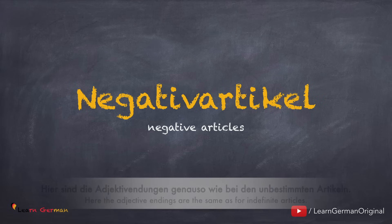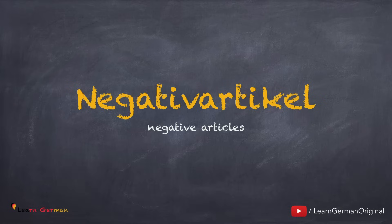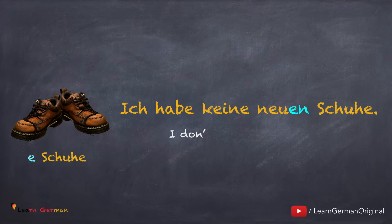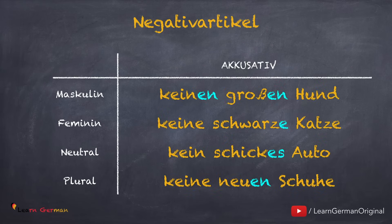Negativartikel: Die Adjektivendungen sind genauso wie bei den unbestimmten Artikeln, es gibt aber eine Pluralform. Hier ist ein Beispiel: ich habe keine neuen Schuhe. Ich ist Nominativ, keine neuen Schuhe ist Akkusativ-Objekt. Das Adjektiv bekommt die Endung -en. Übersicht Negativartikel im Akkusativ: Maskulin keinen großen Hund, Feminin keine schwarze Katze, Neutrum kein schickes Auto, Plural keine neuen Schuhe.